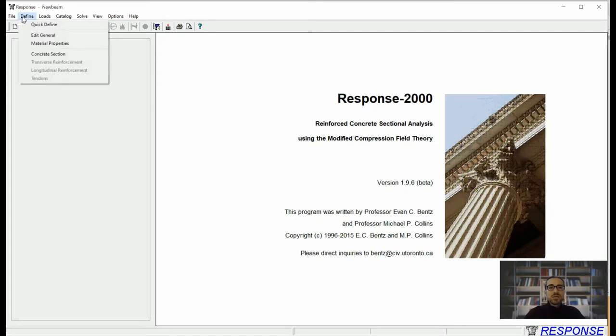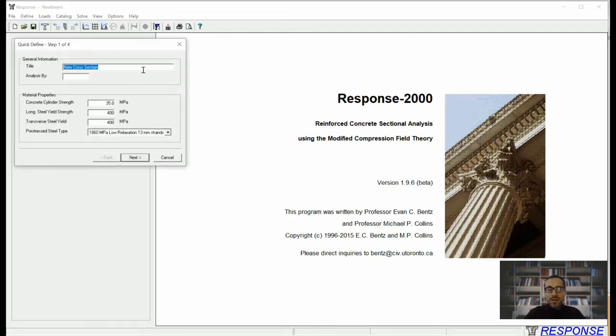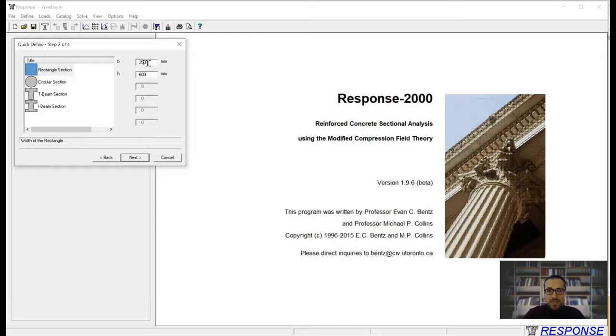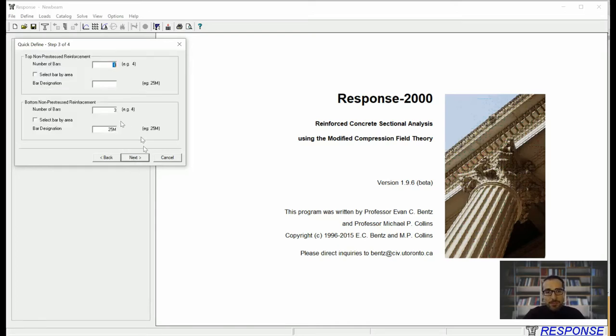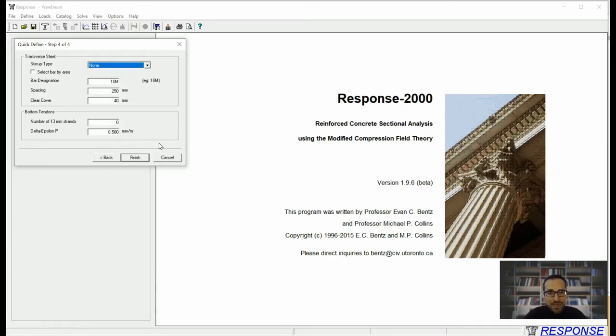The easiest way is to quick define. You can come here and start your analysis by inputting your material properties. You can give it a name, section size you can pick any section you like. I'm going to go with 350 by 500. Top and bottom reinforcement, let's just go with 4 number 5 at the top, 4 number 9 at the bottom.